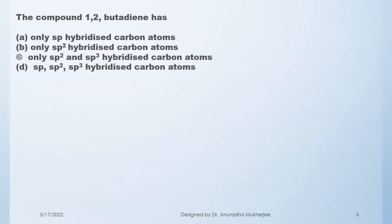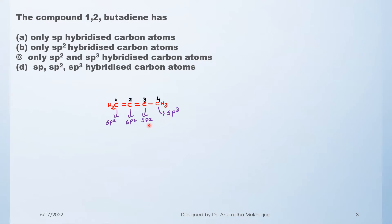To solve this problem, we first draw the structure of 1,2-butadiene. There is a double bond between C1 and C2, and another double bond between C2 and C3. Carbon number 1 is sp2, C2 and C3 are also sp2 hybridized, and carbon number 4 is sp3 hybridized. That means 1,2-butadiene has sp2 and sp3 hybridized carbon atoms, so the correct option is option C.